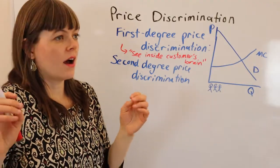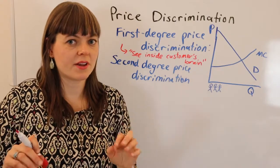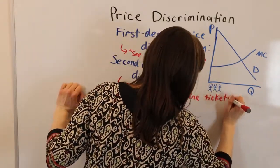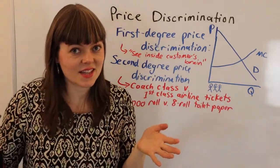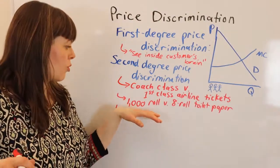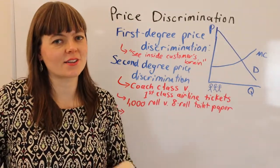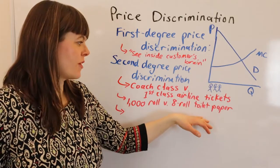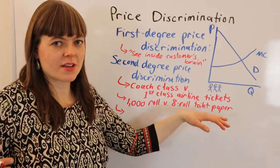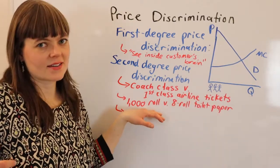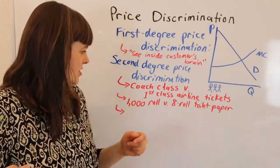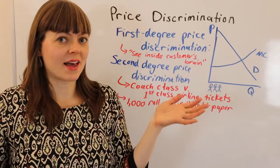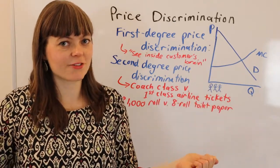Some examples: the first is coach class airline tickets versus first class. The second is toilet paper sold in rolls of a thousand — sold to a business or large group — versus eight-roll versions sold to households, where you can charge more per roll to the household buyer. Another example is mezzanine tickets versus balcony tickets when you go to the ballet or theater.